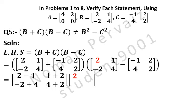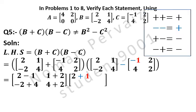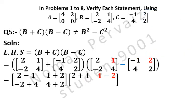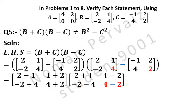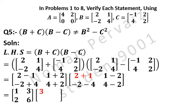Now simplifying: 2 minus 1 is 1, 1 plus 2 is 3, minus 2 plus 4 is 2, 4 plus 2 is 6. Then 2 plus 1 is 3, 1 minus 2 is minus 1, minus 2 minus 4 is minus 6, 4 minus 2 is 2.